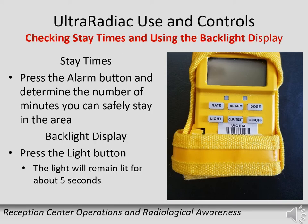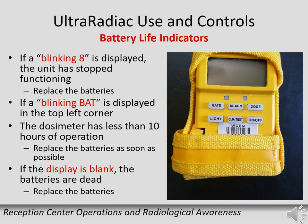Stay times provide another tool to ensure you do not reach your dose limits. Press the alarm button to determine how many minutes you have in the area before reaching your dose setting. If working in low light, press the light button, which remains lit for approximately 5 seconds. Battery strength is critical: a blinking 8 indicates a malfunction — replace batteries. A blinking BAT means less than 10 hours of operation remain — replace soon. A blank display means batteries are dead — replace immediately.